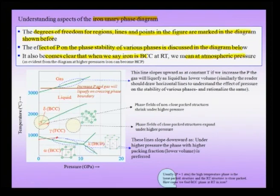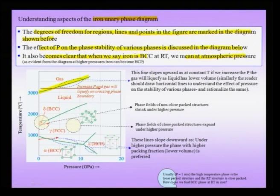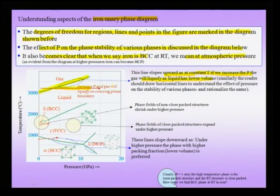The gaseous line slopes upward for a similar rationale: at constant temperature, if we increase the pressure, the gas will liquefy because the liquid has a lower volume. So if I am at a constant temperature and increase pressure along this line, the gas will liquefy, crossing the gas–liquid boundary, and the system will go from the gaseous state to the liquid state.